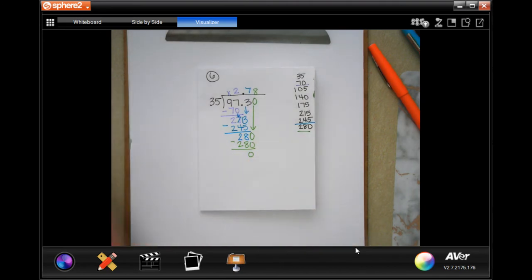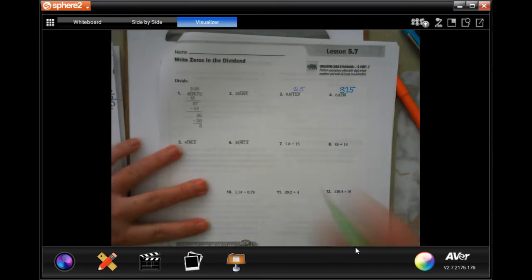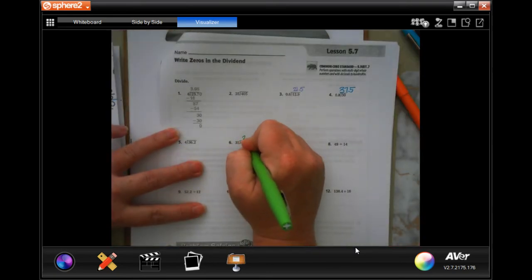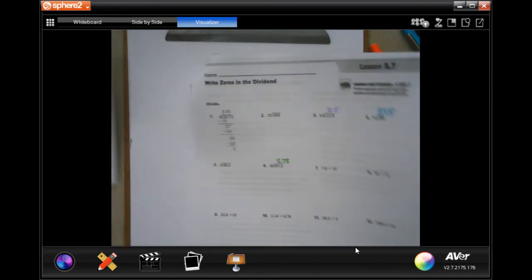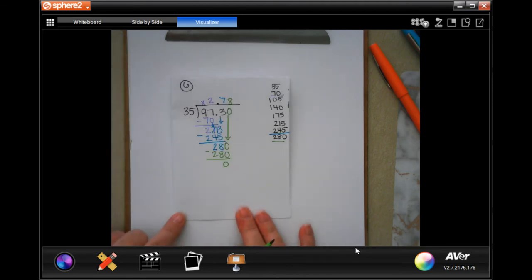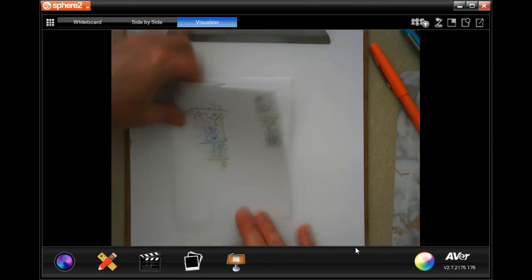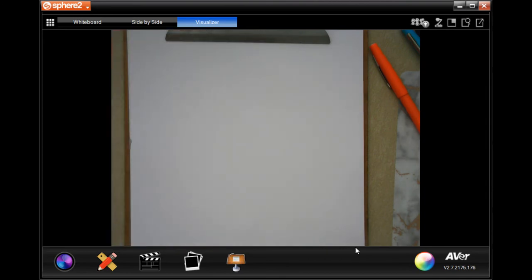So, number six, because we're not going every single one, is going to be 2.78. Write the work down, guys. Pause it. Do whatever you need to do to write the work down. You don't have to write the multiples down. Just write down the work.